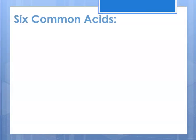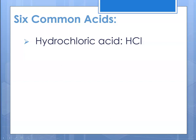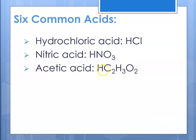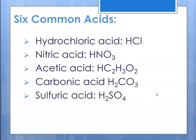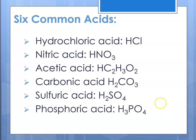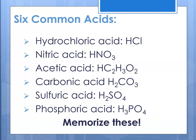There are six common acids to memorize: hydrochloric acid from the chloride anion; nitric acid from the nitrate anion; acetic acid from the acetate anion; carbonic acid from the carbonate anion; sulfuric acid from the sulfate anion; and phosphoric acid from the phosphate anion. Memorize these — they are the acids we will encounter frequently throughout the year, particularly in the next chapter on reactions.